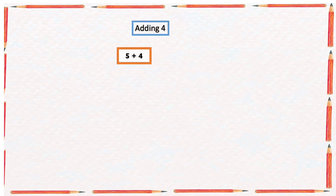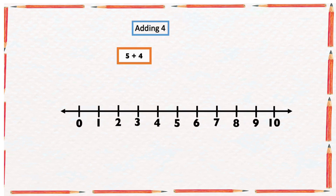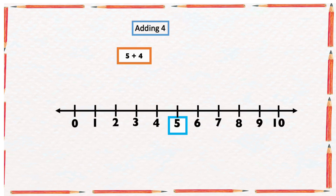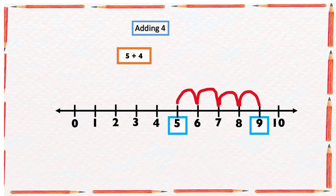Let's look at some examples. Find the sum of five and four. To find the sum of five and four, we're going to use a number line and start from the bigger number, five, and count four numbers forward: one, two, three, four. The arrow ended at nine, so the sum of five and four is equal to nine.